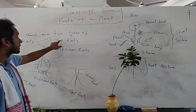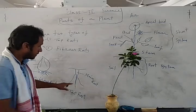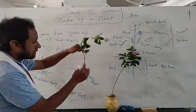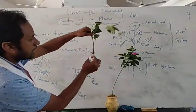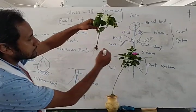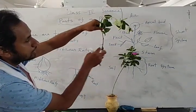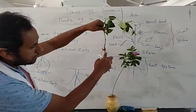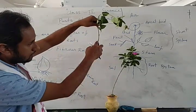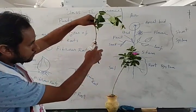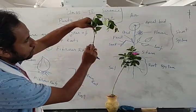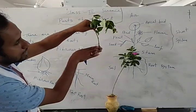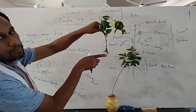In the tap root system, there is a main root and other branches of roots are developed from the main root. The main root goes deep into the soil. So this is the tap root system.